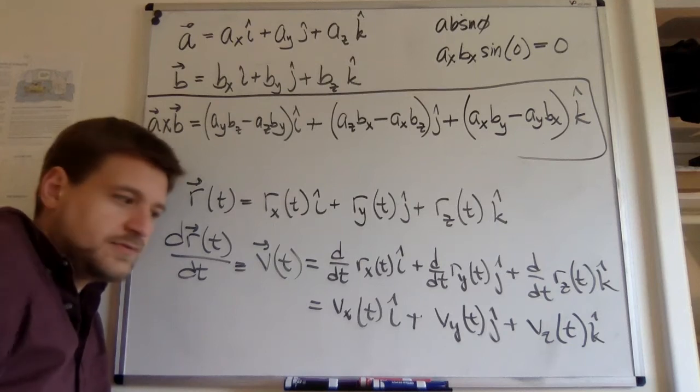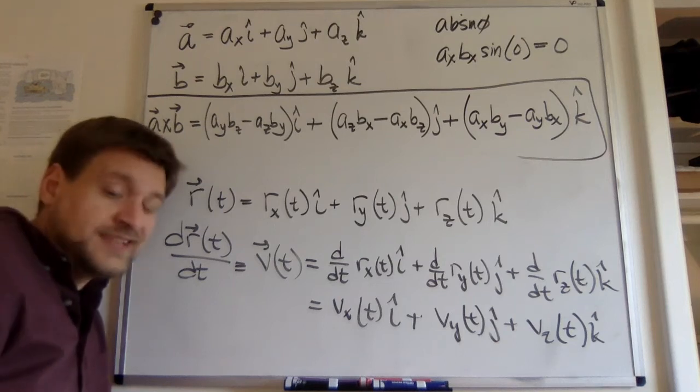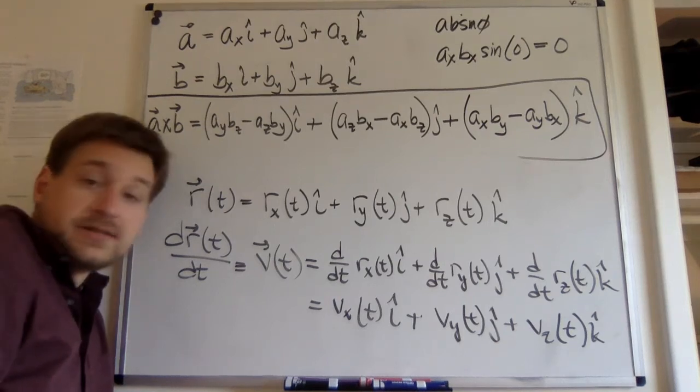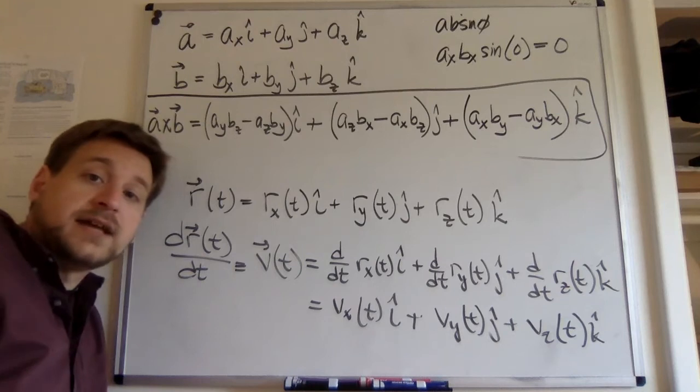But it makes sense, things don't fall to the right, they fall down. Because apparently gravity pulls them down.